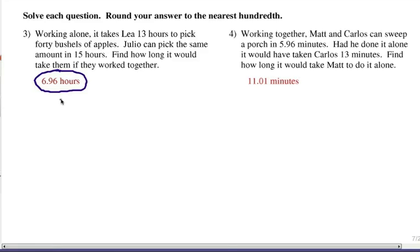Let's do the first fraction representing Leah. So one over how long it takes her to do that job herself, that would be one over 13. We're going to add to that one over the part that Julio can do, and that would be 15 hours doing it by himself. But if we want them to work together, we add those fractions together. And we're going to get one over, and I'll use x to represent their total time to do it together.